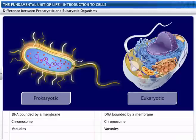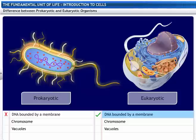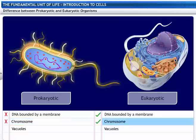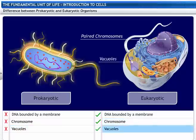Let's see the difference between prokaryotic and eukaryotic organisms. Prokaryotic DNA is not bounded by a membrane and is called the nucleoid. Eukaryotic DNA is bounded by a nuclear membrane. Prokaryotes have a single, circular DNA, while eukaryotes have DNA in paired chromosomes. Prokaryotes do not have vacuoles, while eukaryotes do have vacuoles.